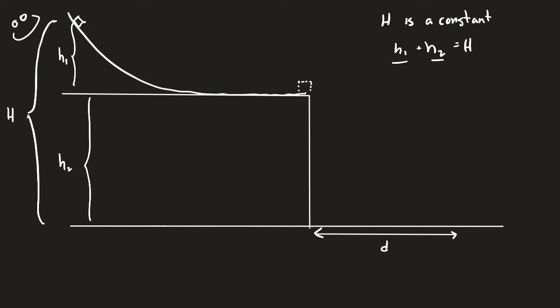If H1 is small, the amount of potential energy the block has relative to the top of the table surface will be small, and therefore it won't have very much kinetic energy when it reaches the edge. This means its horizontal velocity will not be very large when it leaves the table. Even though H2 is large, if it's not moving sideways very fast, it won't land very far from the edge.